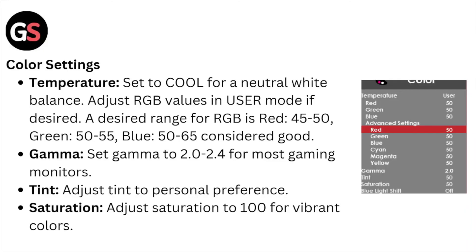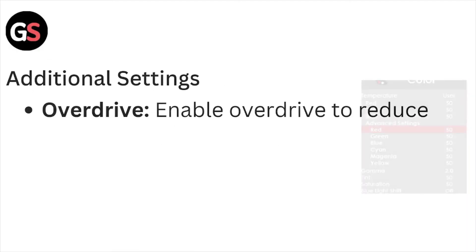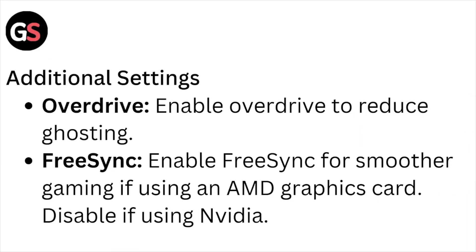Gamma: set gamma to 2.4 for most game monitors. Adjust tint to personal preference. Saturation: adjust saturation to 100 for vibrant colors. Additional settings — Overdrive: enable overdrive to reduce ghosting.